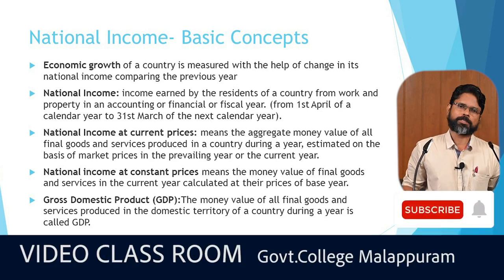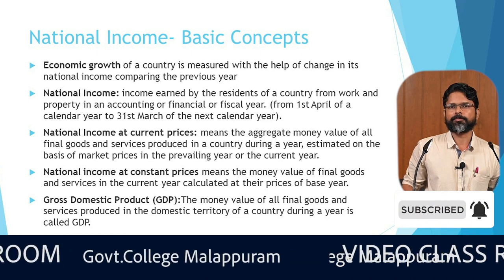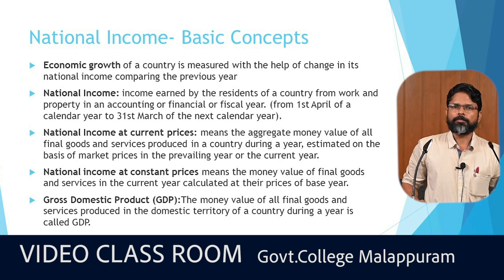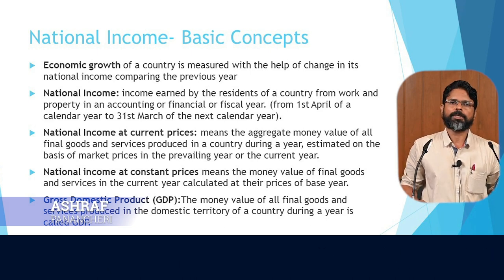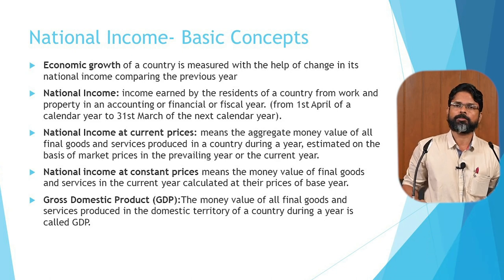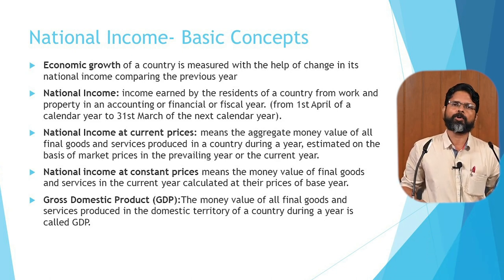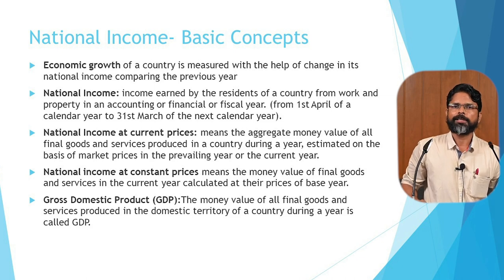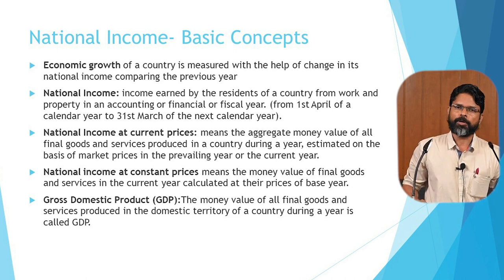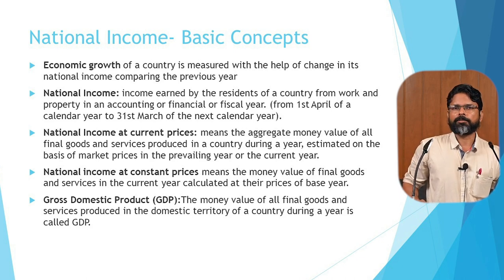The next concept is national income at constant prices, also known as national income in real terms. If we calculate the national income of the country by taking into account the base year prices, it is known as the real national income. For example, to calculate the national income of the year 2019-20, we take the prices prevailed in the base year — the present base year is 2011-12. The prices of commodities in 2011-12 are taken and multiplied with the quantities of the commodities produced in 2019-20 to calculate the national income in real terms.